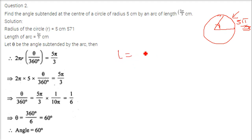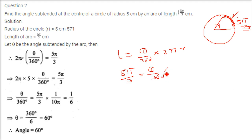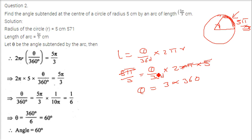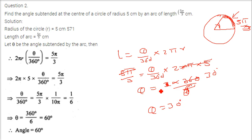We use the same formula: length of the arc equals theta by 360 into 2 pi r. The length is 5 pi by 3, theta is unknown, and r is 5. Solving: theta equals 3 into 360 divided by 2 into 5, which gives 360 by 12, so theta equals 30 degrees.